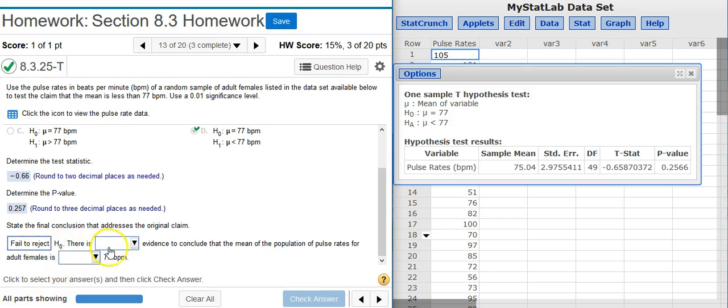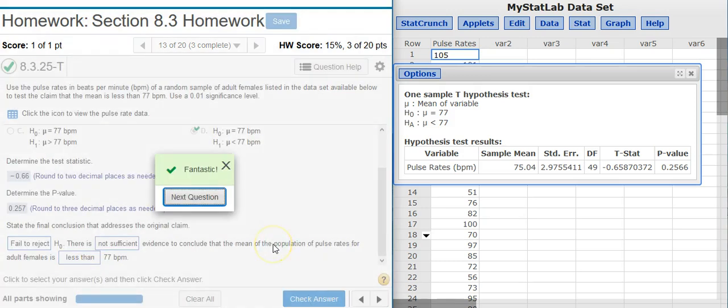we are outside the region of rejection, and we're going to fail to reject the null hypothesis. Because we fail to reject the null hypothesis, there is always insufficient or not sufficient evidence to support the claim. And the claim was that the mean pulse rate is less than 77 beats per minute. I check my answer. Fantastic!